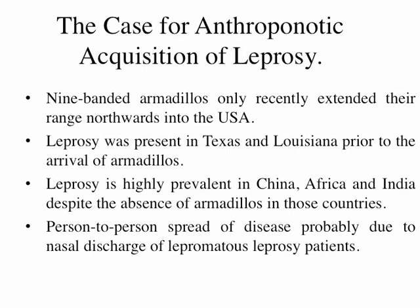However, I want to provide some perspective: the nine-banded armadillo only recently extended its range northwards into the USA. Leprosy has been present in Texas and Louisiana prior to the arrival of armadillos, well back into the 1980s. Leprosy is highly prevalent in China, Africa, and India despite the absence of armadillos in those countries. There's been a lot of discussion about person-to-person spread — anthroponotic transmission — probably due to nasal discharge of lepromatous leprosy patients, whose nasal discharge is absolutely full of acid-fast bacilli of M. leprae. So there's probably both zoonotic and anthroponotic transmission.